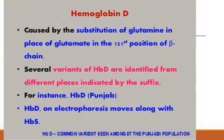Hemoglobin D is caused by the substitution of glutamine in place of glutamate at the 121st position of the beta chain. In hemoglobin D, the glutamic acid normally present at the 121st position of the beta chain is replaced by glutamine. Several variants of hemoglobin D are identified from different places, indicated by a suffix.